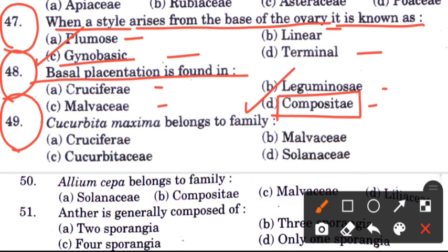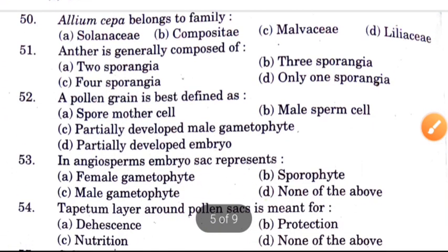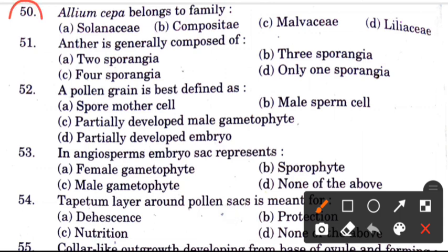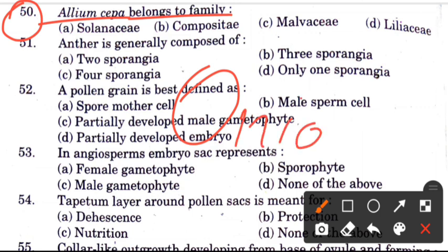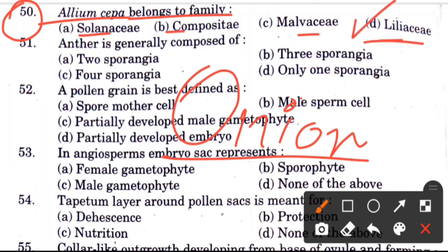Question 49: Cucurbita maxima belongs to which family? Options are Cruciferae, Malvaceae, Cucurbitaceae, and Solanaceae. The answer is Cucurbitaceae. Question 50: Allium cepa belongs to which family? Allium cepa's common name is onion. Options are Soreneshi, Kamsutai, Malvaceae, and Liliaceae. The answer is D, Liliaceae.